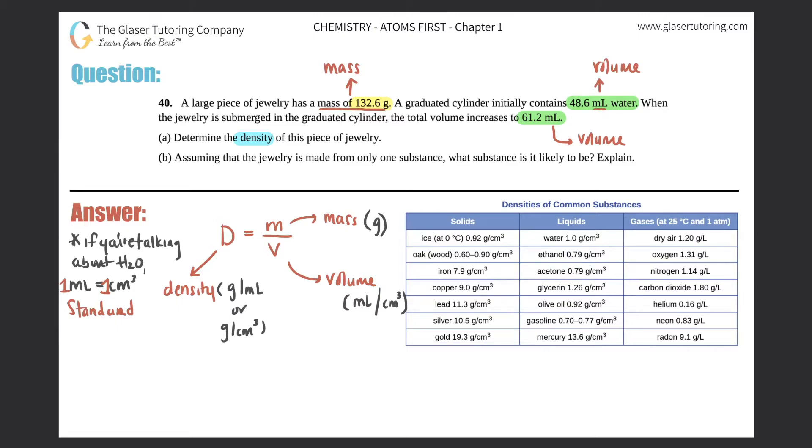For letter (a), they want to know the density. Well, they gave me the mass, which is 132.6 grams. So D equals 132.6 grams divided by—well now here I have to find the volume. It's always going to be the volume of the object that they're talking about. This is finding the volume by something called displacement, just a fancy way of saying change in volume.